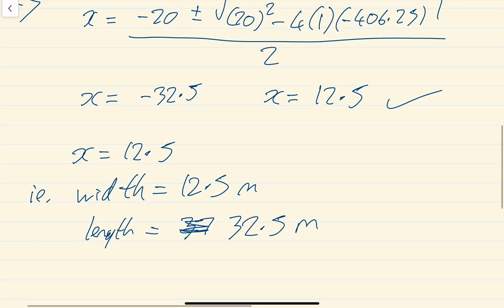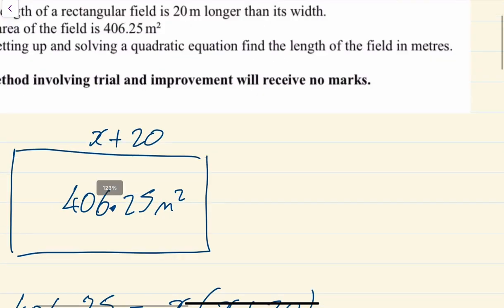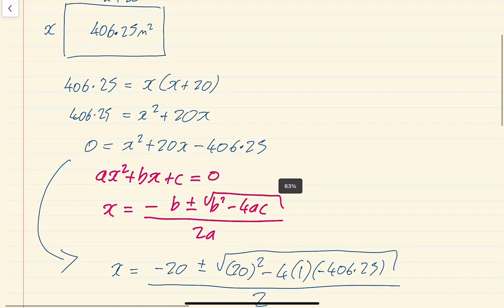And the nice thing you could do here is you could check—you could multiply those two things, 12.5 times 32.5. I've done that in my calculator and I got 406.25, so I know I'm right.